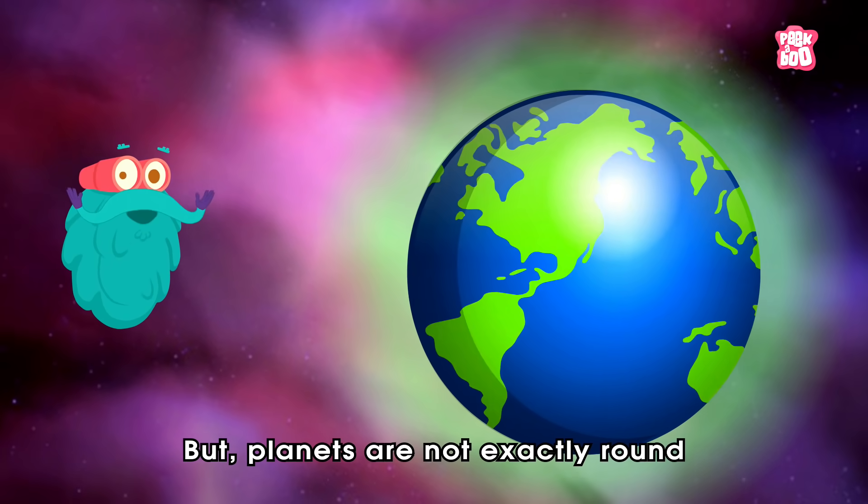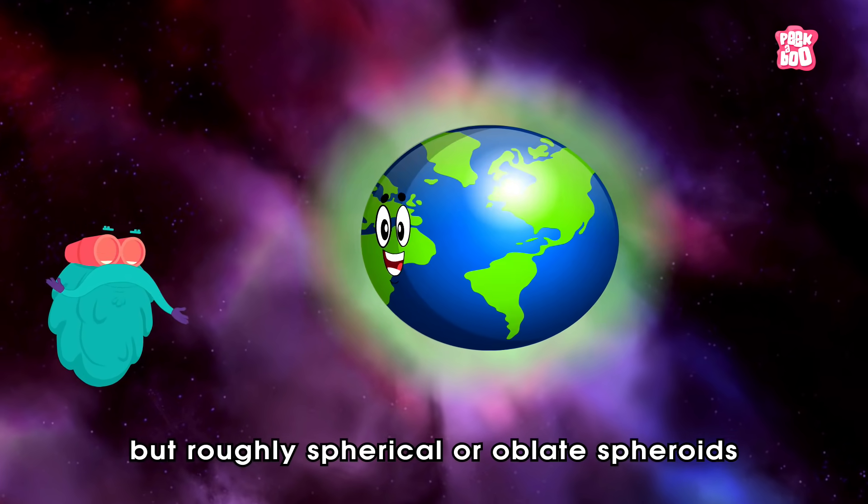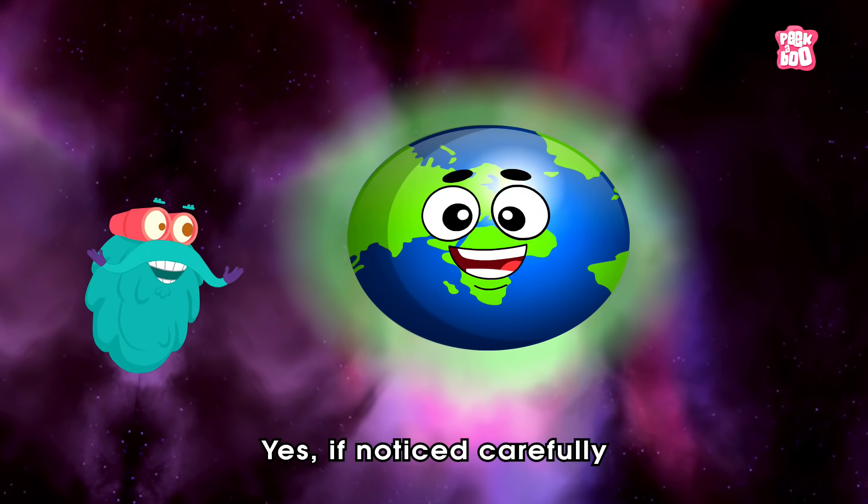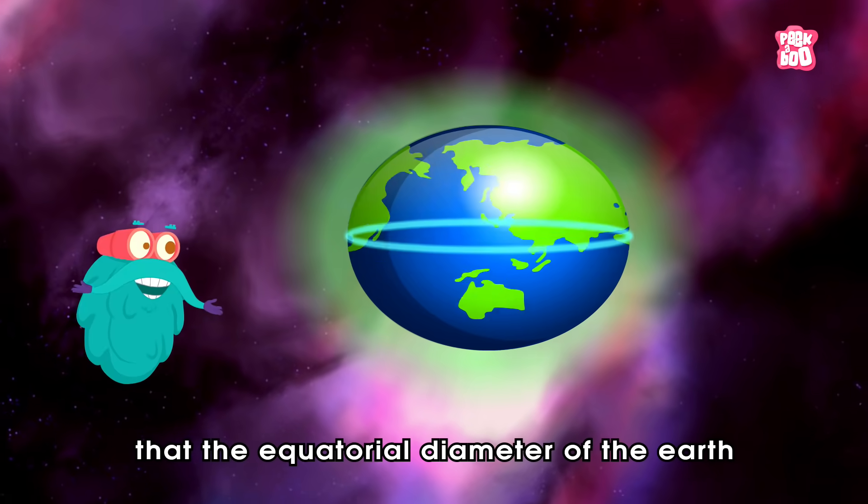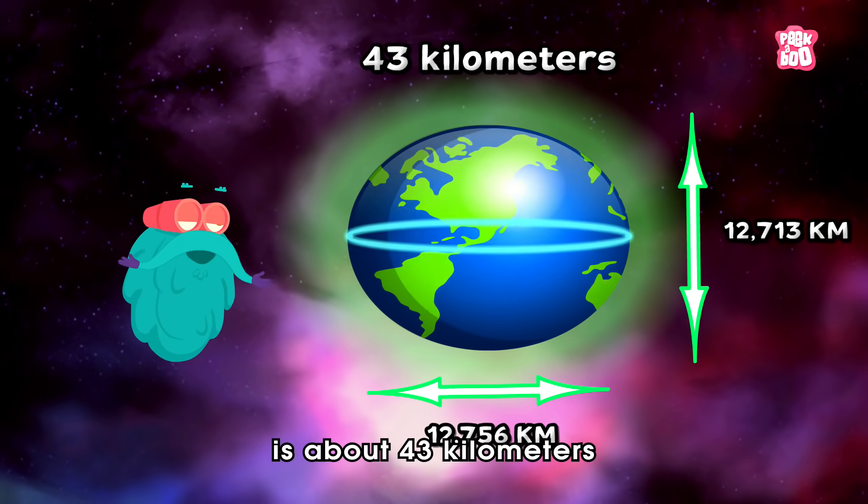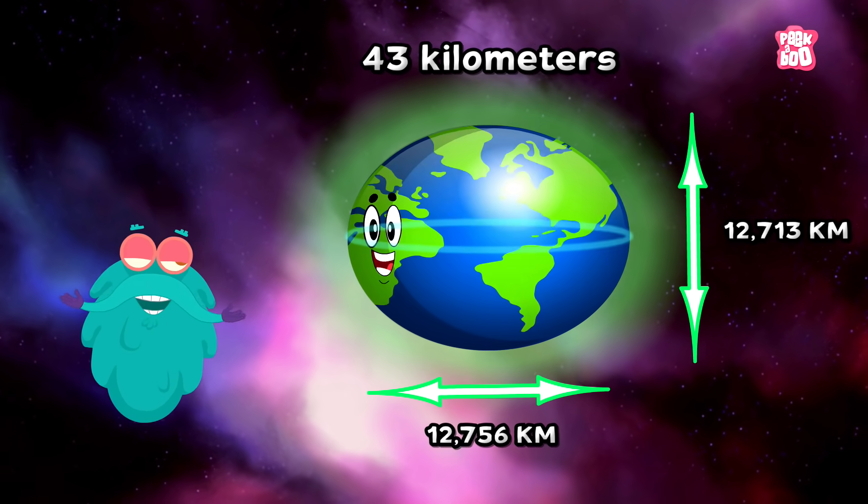But planets are not exactly round, but roughly spherical or oblate spheroids. Yes, if noticed carefully, you will see that the equatorial diameter of the Earth is about 43 kilometres larger than the polar diameter.